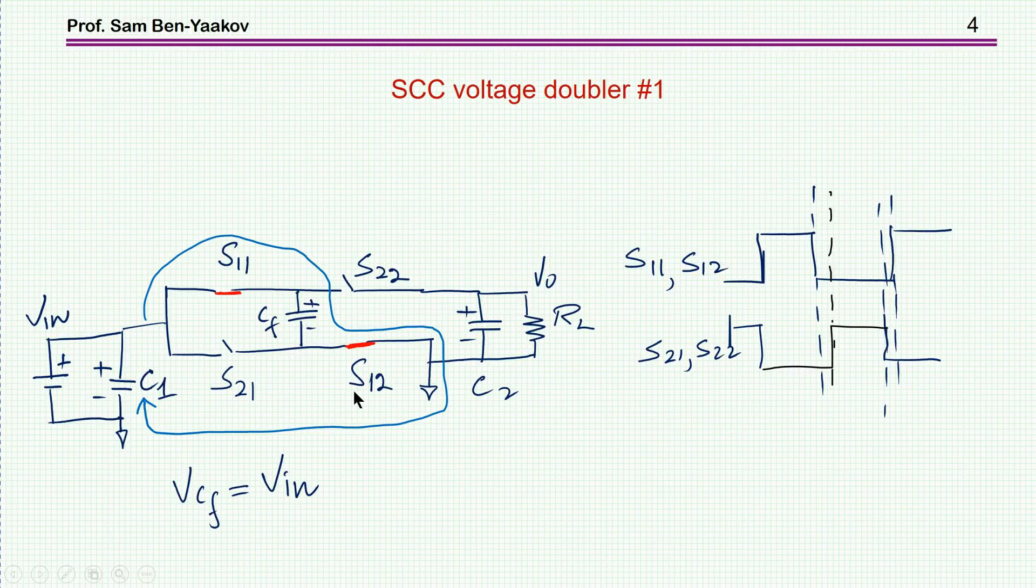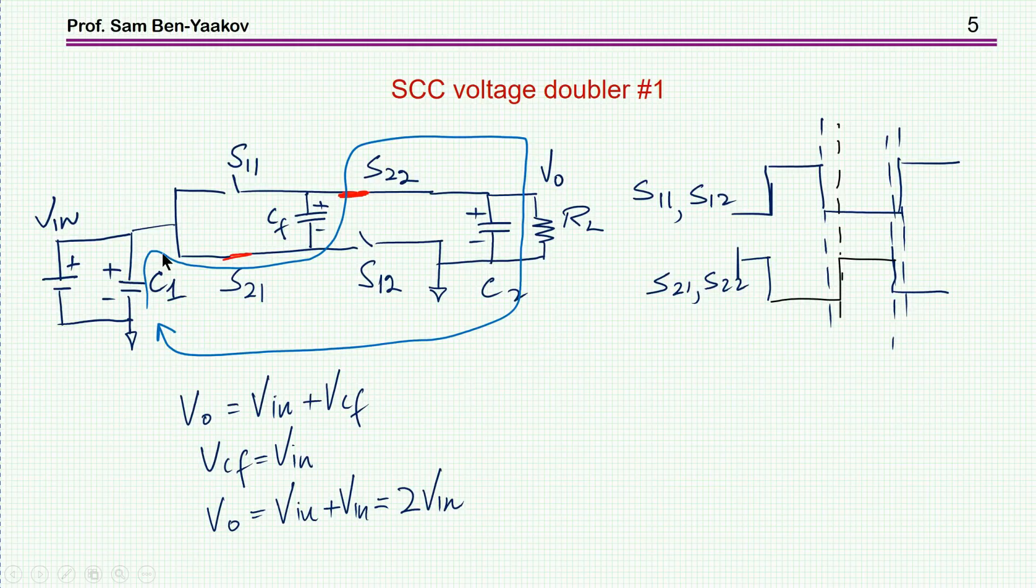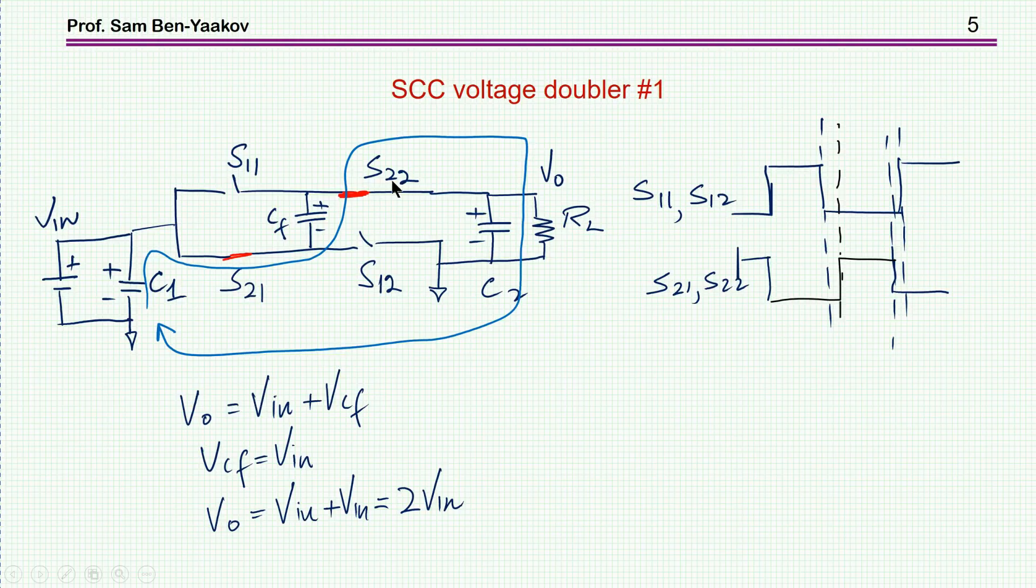And then in the second phase, this capacitor by virtue of S21 and S22 is connected in series with the input to the output, so that the output now sees the input voltage plus the voltage across C sub f. Since the voltage across C sub f is already V in, then we get twice the input voltage. So this is a step up voltage doubler converter.